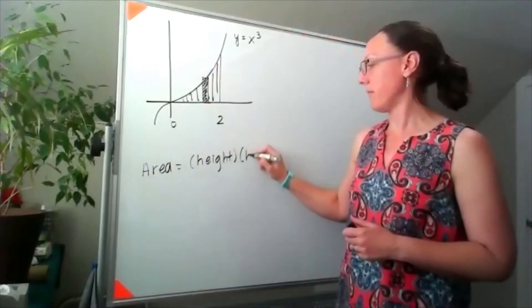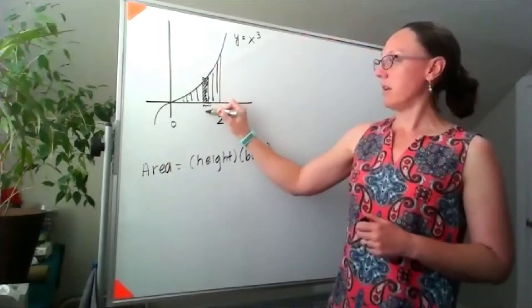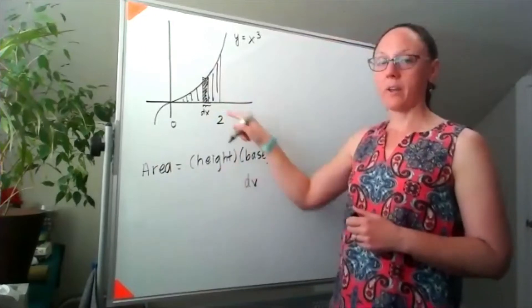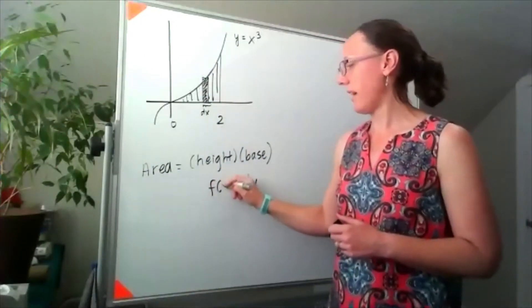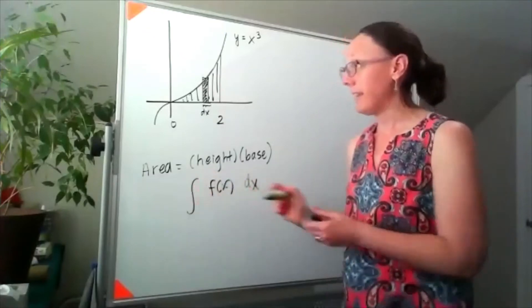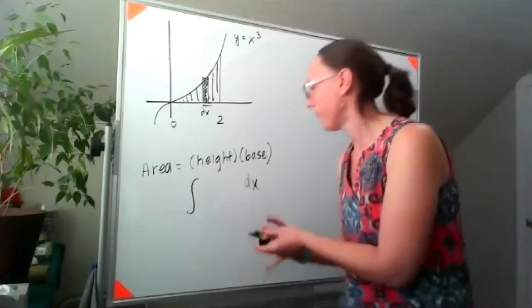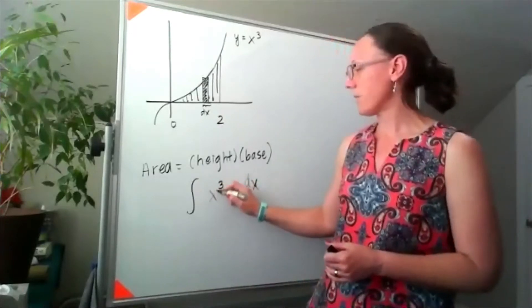Our base was a little bit of dx, and our height we would get from the function. So our height was f of x. In this case, f of x is x cubed.